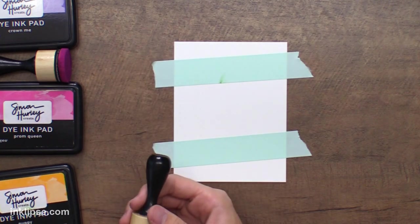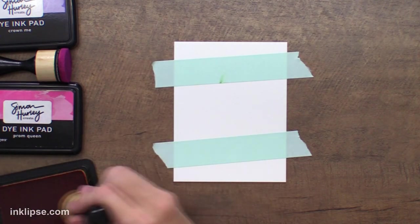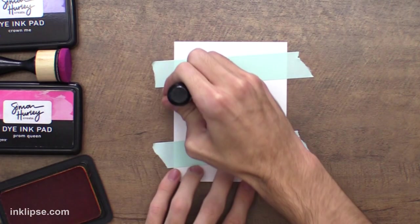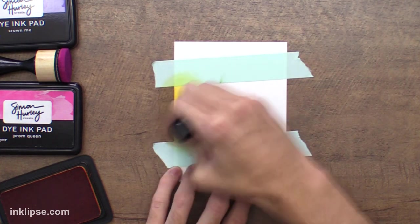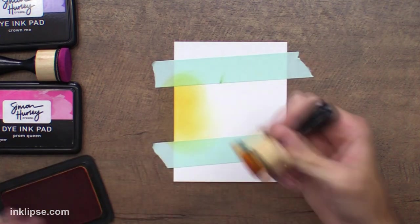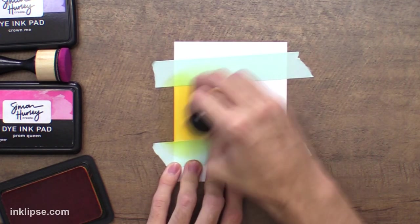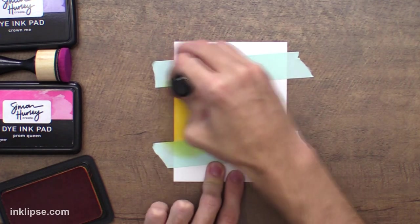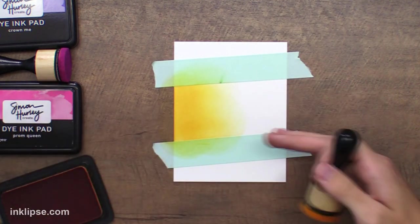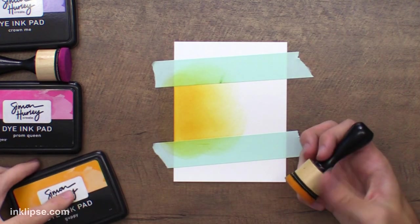We're getting into kind of the Halloween spirit around here, so I've picked out three different colors that I really like: Guppy, Prom Queen, and Crown Me, and I'm just going to go in and blend these on the edges. One thing I wanted to look for, too, is to make sure it's going to stick down enough to hold it down for ink blending. And it's going to do that even though we're applying lots of force, and we'll see how clean the lines are after we're done blending.